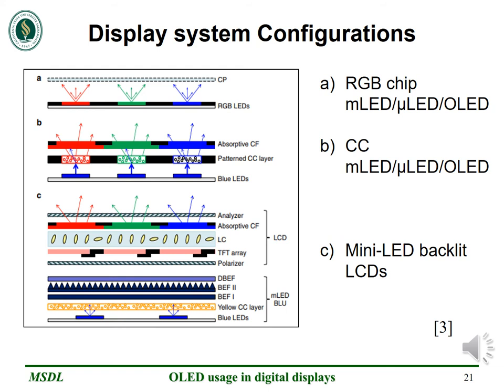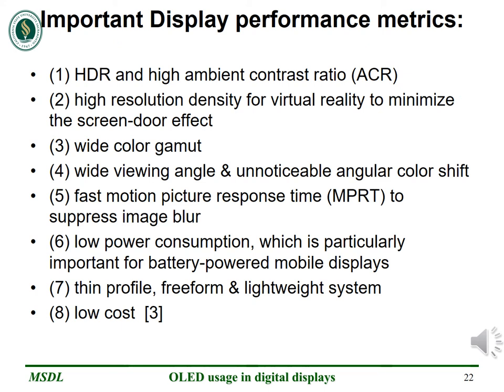Let us see a few display system configurations and their logic. Figure 1 shows the color conversion or CC emissive displays, where the red, green and blue chips emit light in upward and downward directions. In Figure 2, the chips serve as subpixels; the blue LED pumps subpixels in a patterned CC layer, and absorptive color filter arrays absorb unconverted blue light. In Figure 3, the backlight is segmented into zone structures, each containing several mini-LED chips to control panel luminance. Each zone can be turned on and off selectively. The blue mini-LED chips pump a yellow CC layer to generate white backlight, and the CC layer scatters light up to two brightness enhancement films. Details of these measurement metrics are beyond the scope of the presentation; I shall be touching upon power consumption, ambient contrast ratio and motion picture response time in the next few slides.